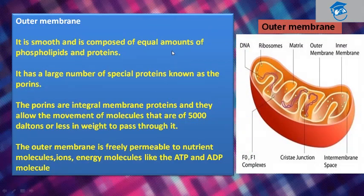Let's take a closer look at each part of the mitochondria. This is the outer membrane, this is the inner membrane, and this is the matrix which is present inside the inner membrane. These are ribosomes present inside the matrix, and the circular DNA is denoted by purple color. These are the cristae junctions. The intermembrane space is the space between the outer membrane and inner membrane. Cristae have two complexes, F0 and F1.